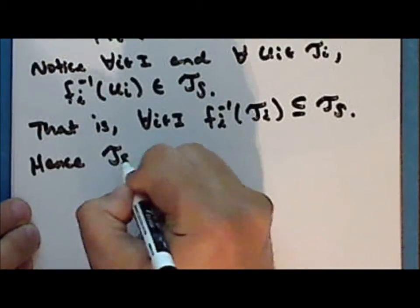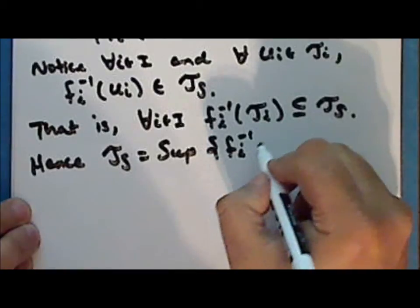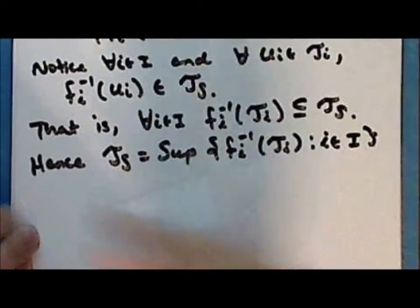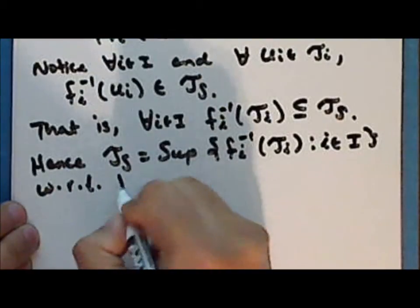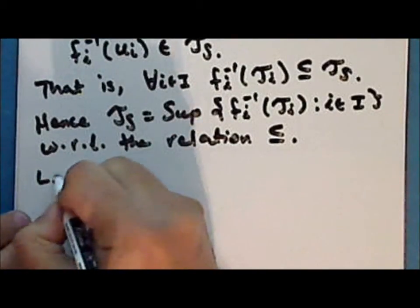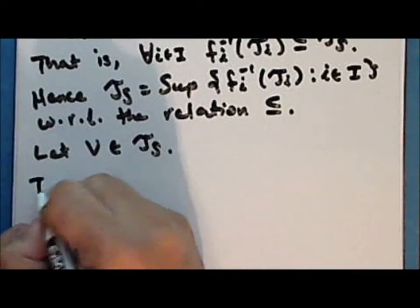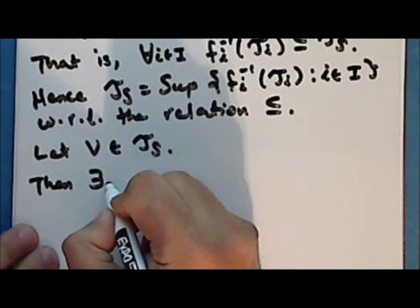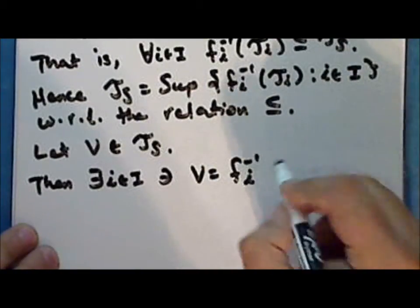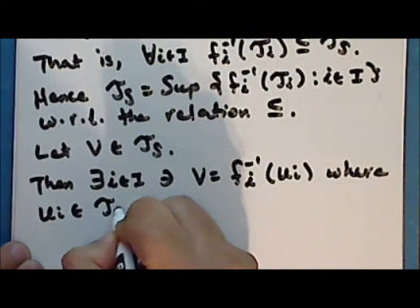And hence the initial topology is the supremum of the set of inverse images under the maps f sub i of the topologies tau sub i, for i in the indexing set I. So let v be a set in the initial topology; then there exists at least one index i such that the set v is the inverse image under the map f sub i of a set u sub i, where u sub i is in the topology tau sub i.